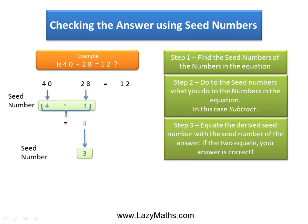The next step or the last step is to get the seed number for the right side of the equation. Seed number for 12 is also 3. As you can see, both the seed numbers on the left side and the right side are equal, hence the answer is correct.